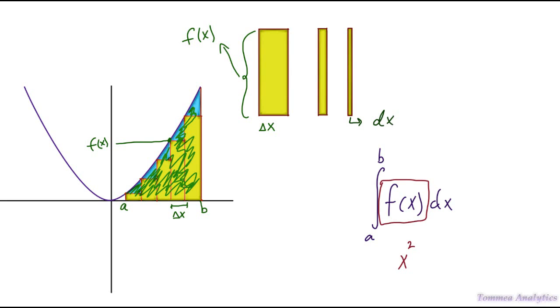Now we want to add all of those rectangles up. We want to sum them all so we can have a very good approximation to the area underneath the curve of x squared between a and b. So the notation that we use for that is this symbol right here, which is really just an s that is elongated, that stands for summation, to sum up all of the areas of the rectangles.